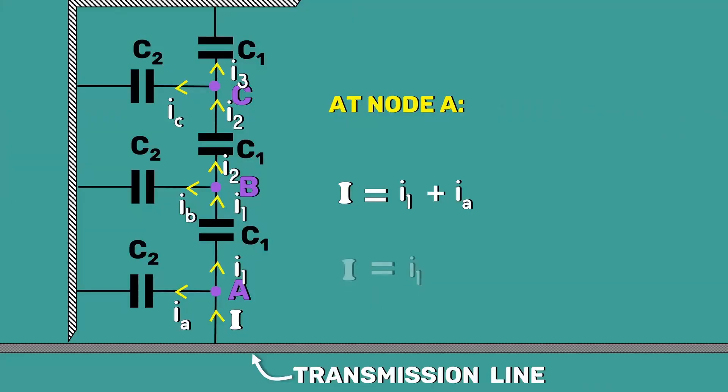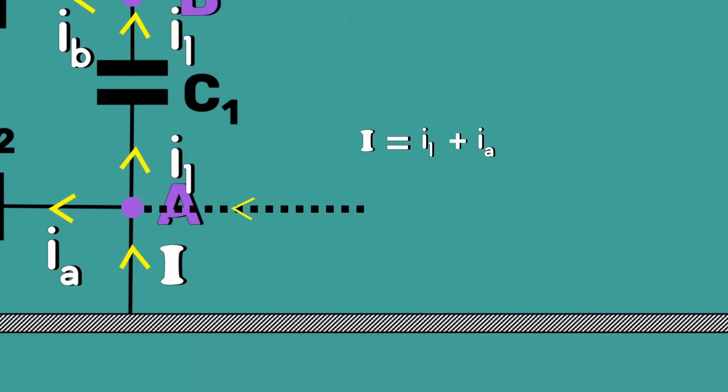If we make a small adjustment in this equation, we can achieve our goal, which is I1 equals I. The small adjustment is adding an extra current to enter the node whose magnitude is close to Ia.